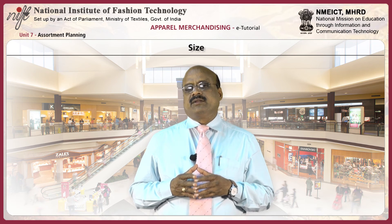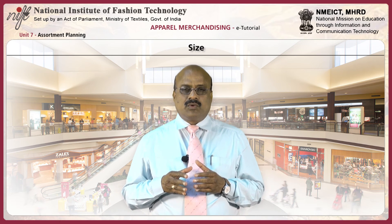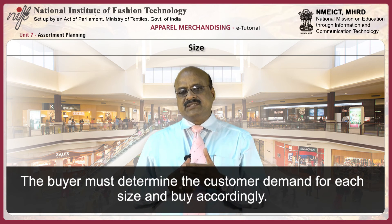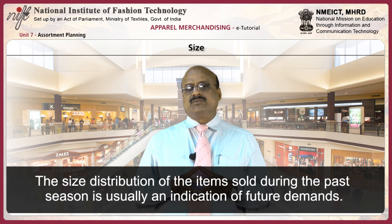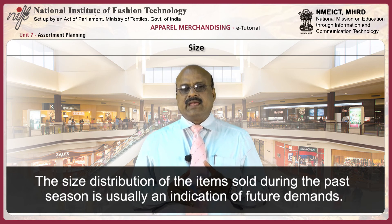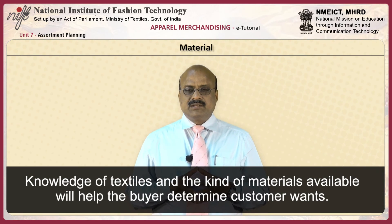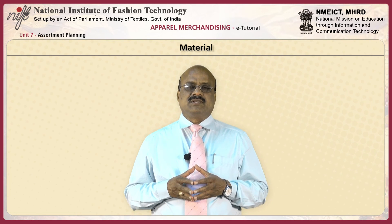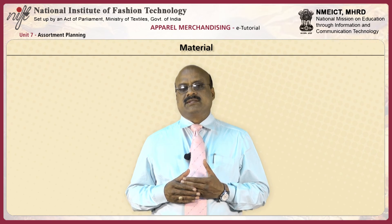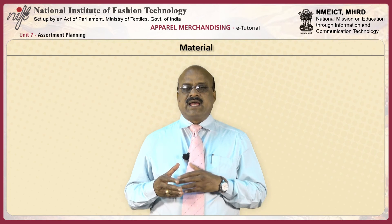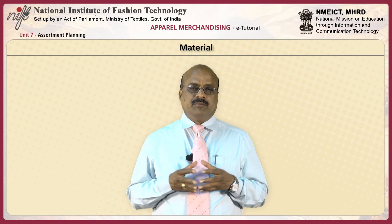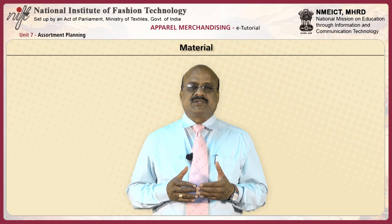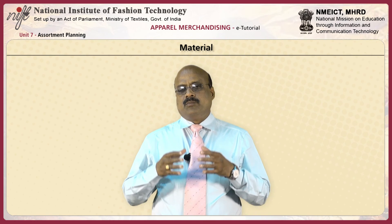Size is an important factor with most fashion merchandise — not only for fashion apparel but also for many home furnishings. The buyer must determine customer demand for each size and buy accordingly; the size distribution from past seasons is usually an indication of future demand. Knowledge of textiles and kinds of materials available helps buyers determine customer wants — for example, wide customer acceptance of cotton denim caused retail buyers to stock fashion apparel such as jeans, hats, swimsuits, and handbags made of denim.